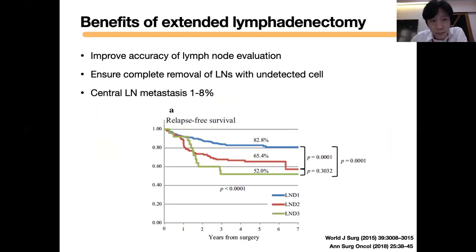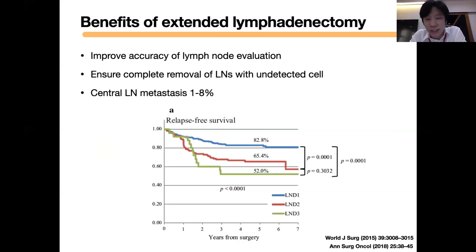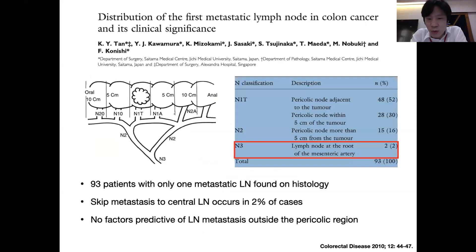The benefit of extended lymphadenectomy — why should we do D3 dissection or central vascular ligation to remove all these lymph nodes? First, it improves accuracy of lymph node evaluation because there is some central lymph node positivity of around 1 to 8% reported in the literature. If we do extended lymphadenectomy, we can accurately stage these lymph nodes. It is reported that if the central lymph node was positive for malignancy, the patient's survival will be worse than the group without central lymph node metastasis. However, we do not recommend routine extended lymphadenectomy because it is not 100% certain that you have central lymph node metastasis.